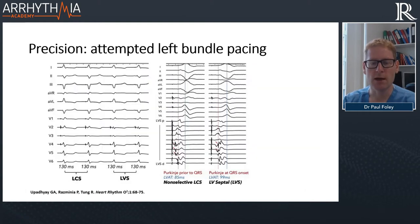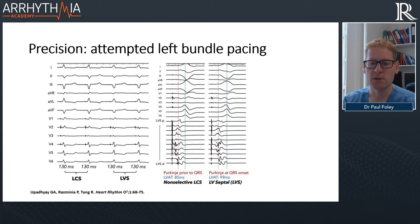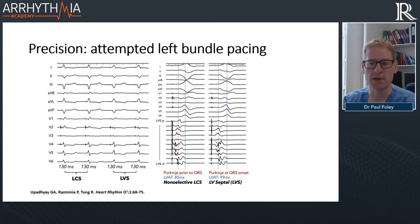Moving to left conducting system pacing: one lead is in the left conducting system, the other in the LV septum, and the QRS morphology looks very similar with the same duration. However, with high-fidelity mapping, non-selective left conducting system stimulation shows Purkinje activation prior to the QRS — shown by the red arrows — whereas when the lead is in the LV septum, Purkinje fibres activate within the QRS onset. The left ventricular activation time is shorter when you're in the left conducting system. This illustrates the greater complexity of physiological pacing compared to standard RV pacing.